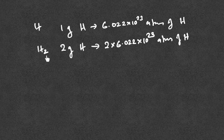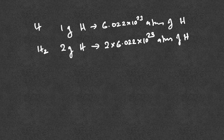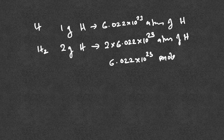H₂ is 2 grams. That means 2 into 6.022 into 10²³ atoms of hydrogen, which equals 6.022 into 10²³ molecules of hydrogen.